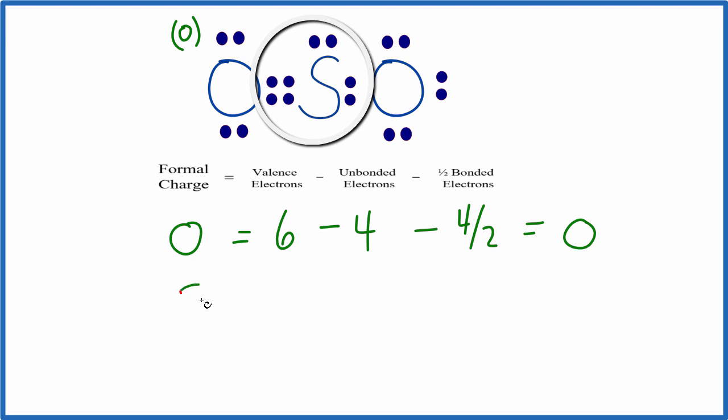For the sulfur here, six valence electrons minus the unbonded, just the two, minus the bonded, two, four, six divided by two. Those are the bonded electrons. They're between atoms. They form the chemical bonds. 6 - 2 - 6/2 gives us +1. So the sulfur has a plus one formal charge.